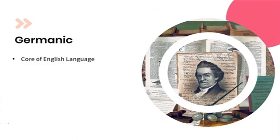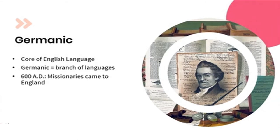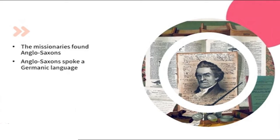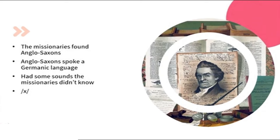The core of the English language is Germanic — a branch of languages, not to be mistaken with the German language. Christian missionaries first came to England in 600 AD and brought with them the Roman alphabet, which is the alphabet we still use for English writing today. These missionaries found Anglo-Saxons who spoke a Germanic language. The Anglo-Saxons' Germanic language had some sounds that the missionaries didn't know. They used the letters GH to represent one such sound.